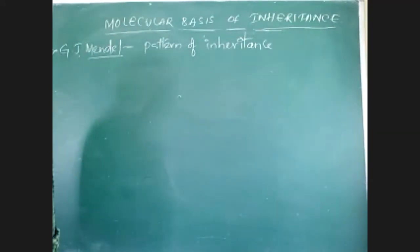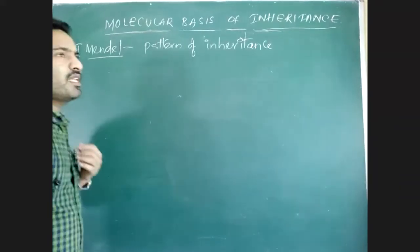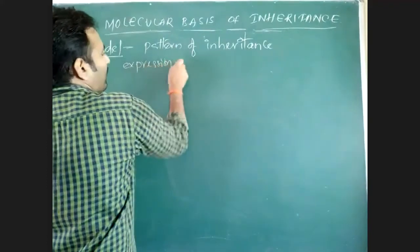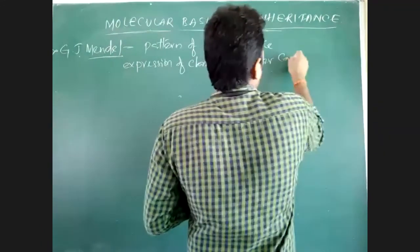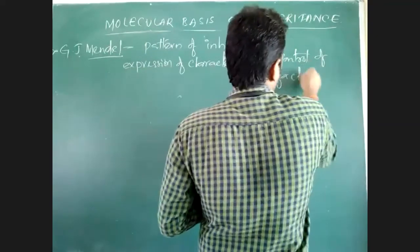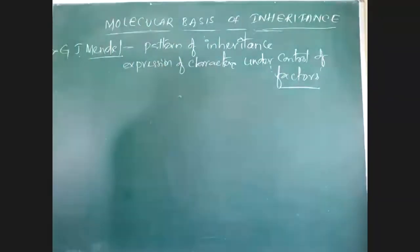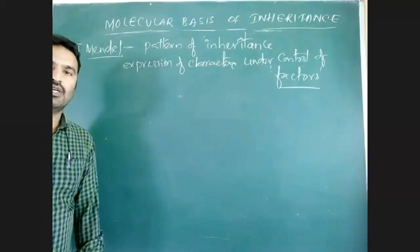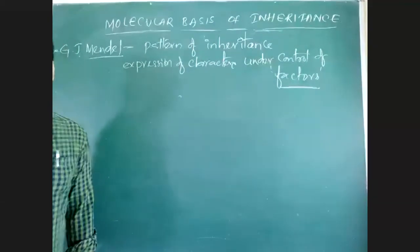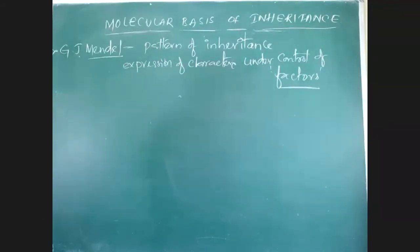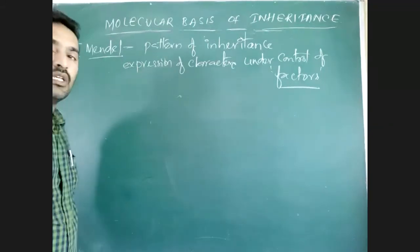Mendel studied that expression of characters is under control of factors. He proposed it. Factors are responsible for the expression of a character — that is what we are now calling alleles. Genes and alleles — nowadays we call that factor as alleles. He told that there is expression of character which is under control of alleles. But Gregor Johan Mendel's work was not clear for about 100 years.